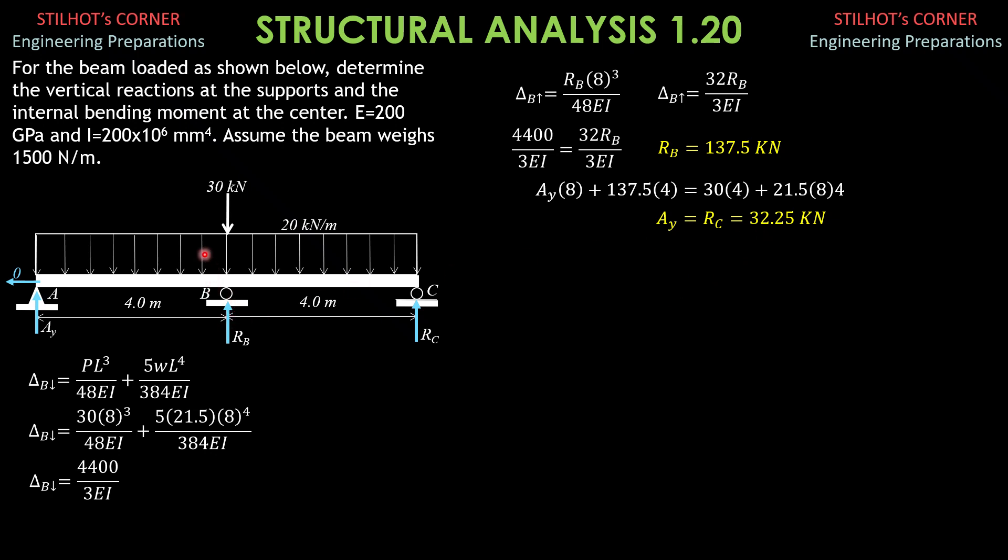Next is this internal moment at B. Let's assume it is positive. At the left positive is clockwise, at the right counterclockwise as shown. Considering portion AB only and the forces loadings between A and B, summation moment about B equals 0. MB plus 21.5 times 4 times 2 minus AY times 4 equals 0. M sub E plus 21.5 times 4 times 2 minus AY 32.25 times 4 equals 0. From there, we can solve for MB equals negative 43.00 kilonewton meter. That's it for this problem.